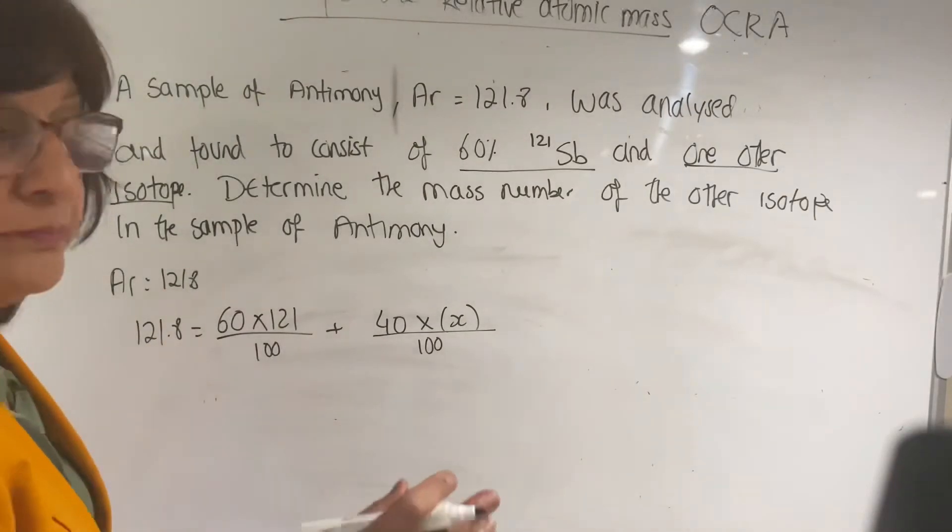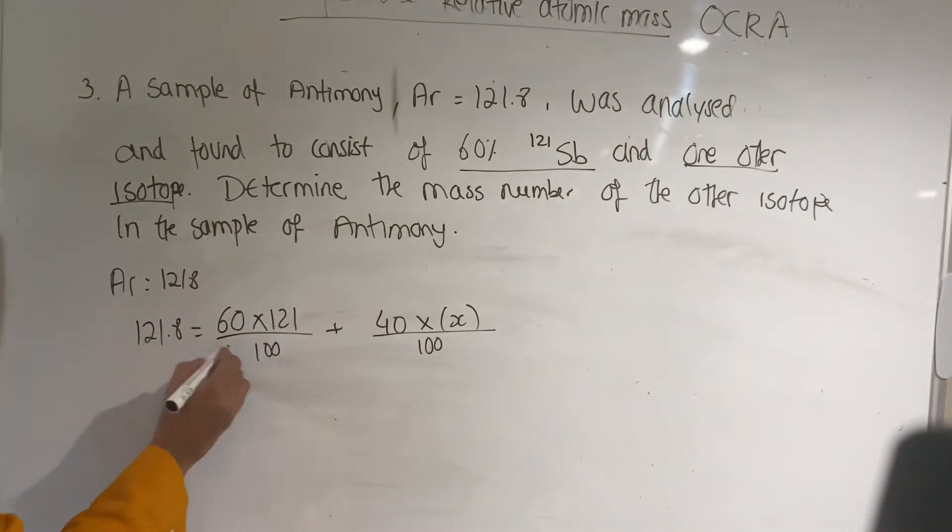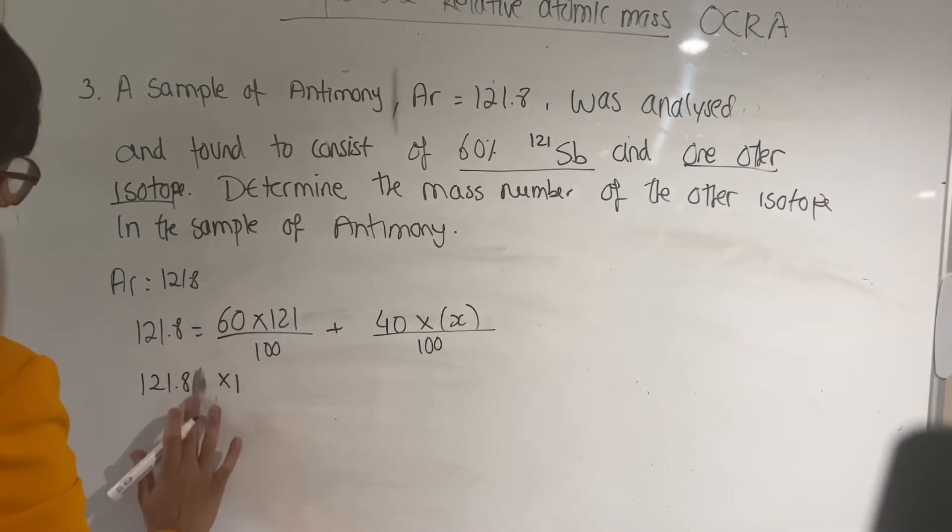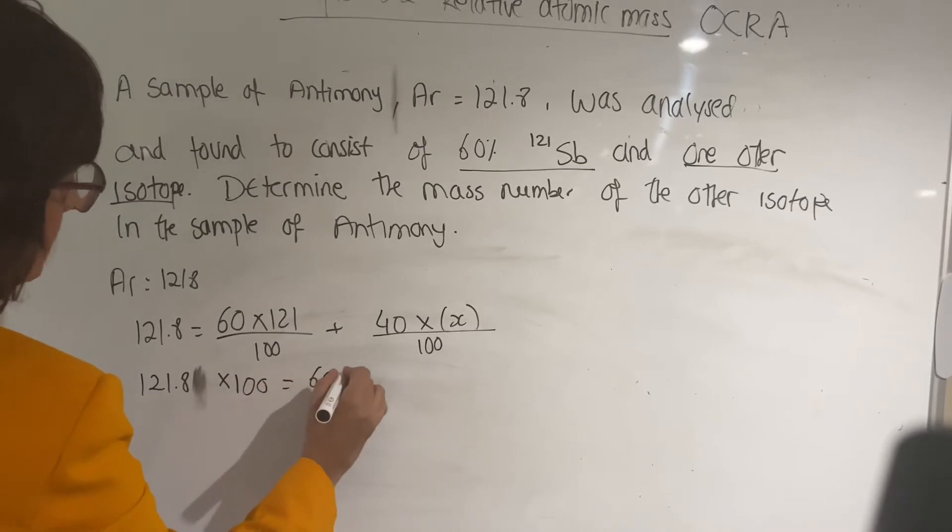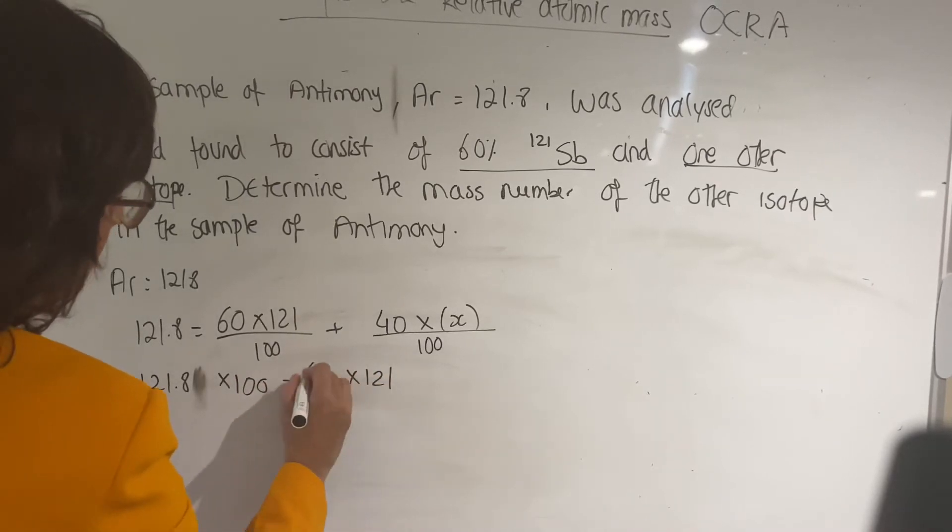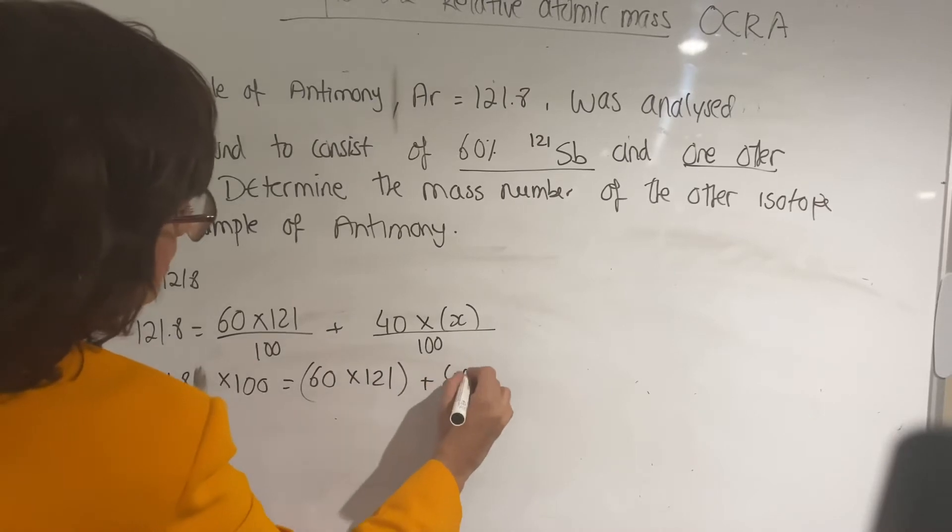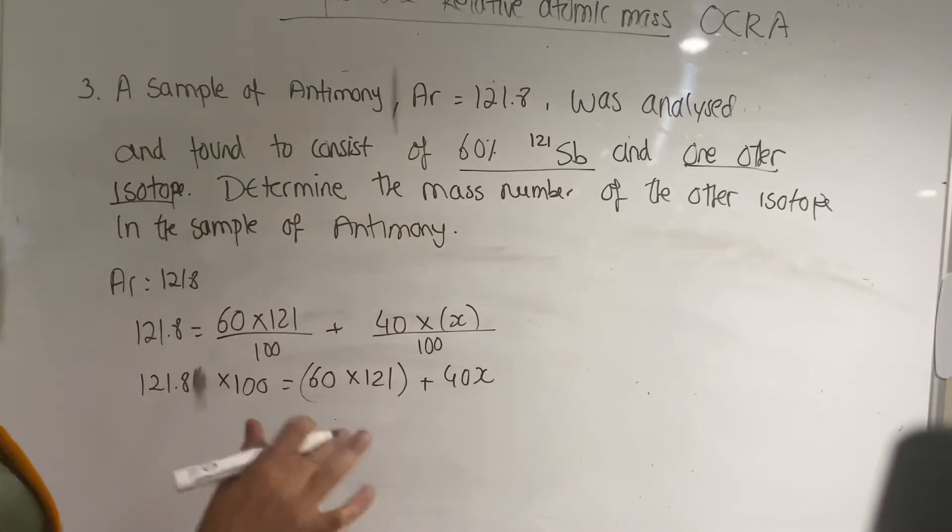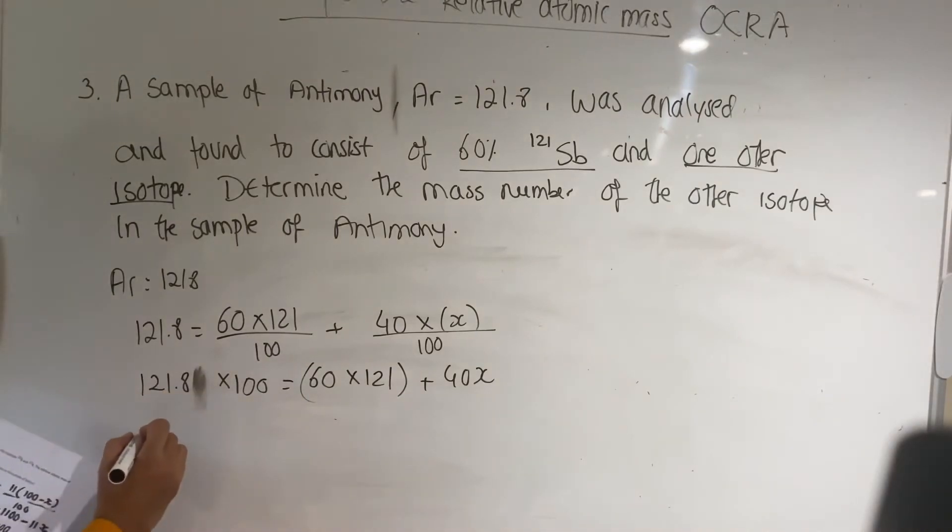The first thing you do is multiply 121.8 times 100, so it'll be 121.8 times 100 equals to 60 times 121 plus 40x. So you got rid of 100 by multiplying by 100, so all the hundreds are gone.